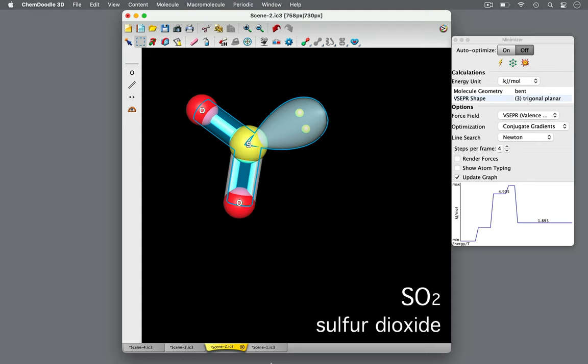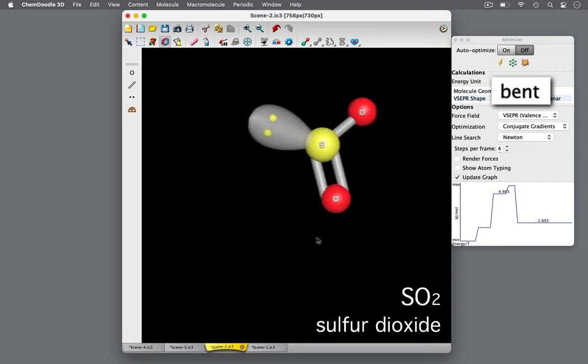Therefore, sulfur dioxide has a trigonal planar electron domain geometry with angles similar to 120 degrees. However, due to the unshared electron pair, VSEPR theory predicts a bent molecular geometry for sulfur dioxide.